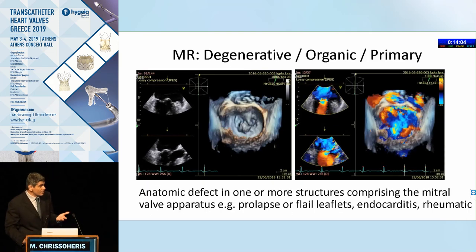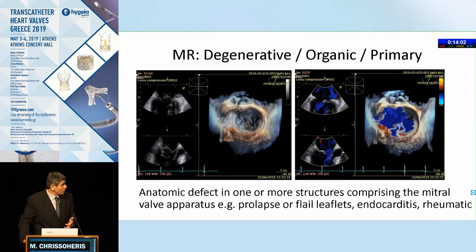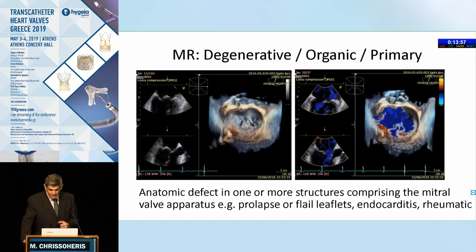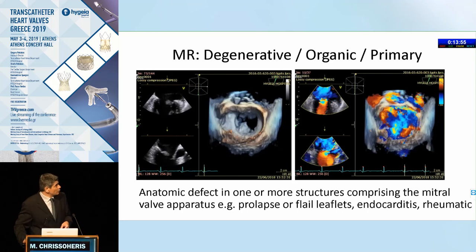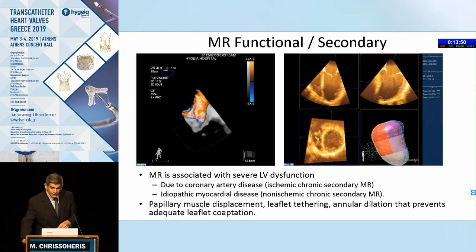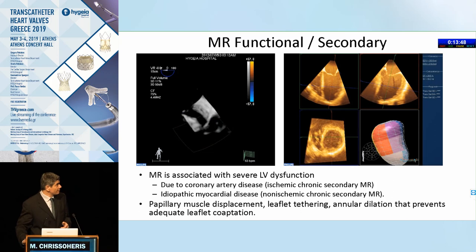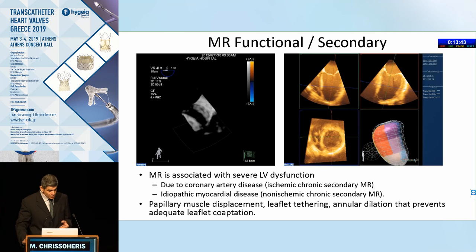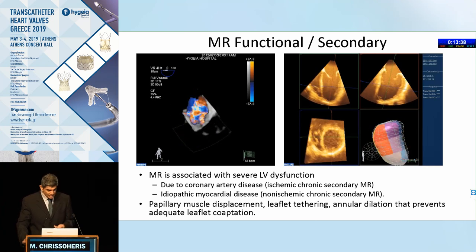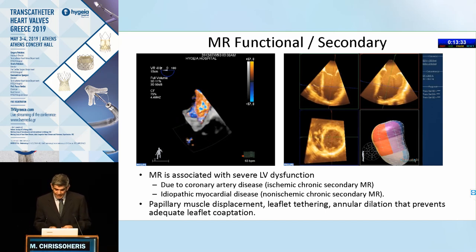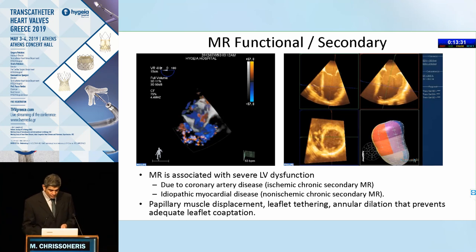Regarding degenerative, organic, or primary MR, the defect is primarily on the leaflets or the mitral valve apparatus — as in this case, a P2 prolapse with severe regurgitation. On the other hand, with severe functional ischemic or secondary MR, the problem is primarily due to LV dysfunction caused by coronary artery disease or idiopathic reasons, with displacement of the papillary muscle, tethering of the leaflets, and annular dilatation leading to abnormal coaptation.